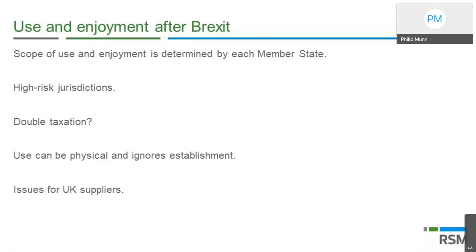The use and enjoyment rules ignore physical establishment — so it's not the case that the UK business needs a Spanish establishment for the rules to apply. This is a purely academic test of where services are used and enjoyed. The UK also has use and enjoyment rules, so for some services — telecommunications, electronically supplied services — UK suppliers must go through the same thought process: any customer outside the UK potentially becomes subject to these rules, bringing supplies within the scope of UK VAT for the first time.